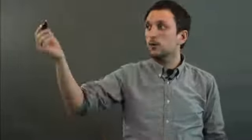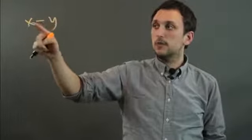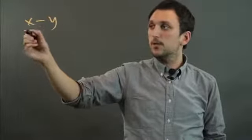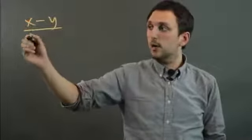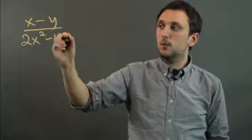A polynomial is an expression with multiple terms. For example, if we had x minus y, that's two terms. We could say x minus y over 2x squared minus 4y.